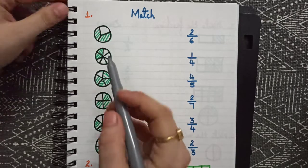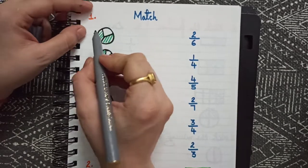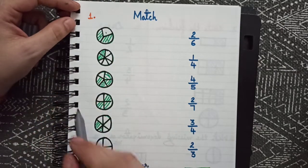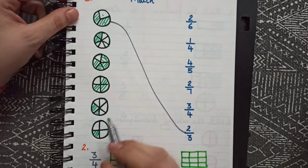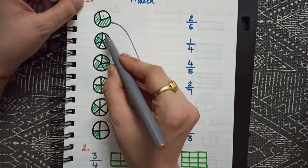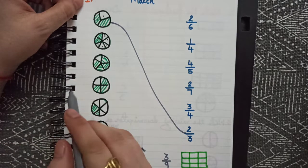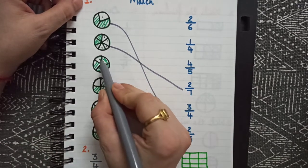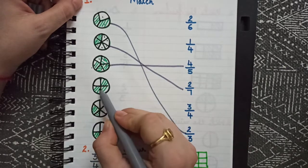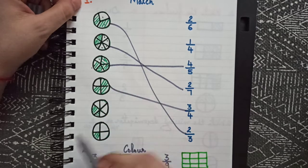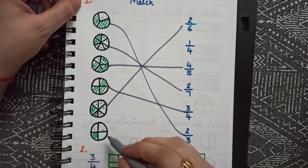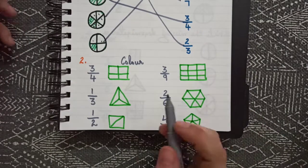Let's understand with examples. Give kids this sort of exercise. First we count the number of divisions made — one, two, three — so that is three, and the shaded part is two, so the answer is two by three. Again, one, two, three, four, five, six, seven — that's seven — and two shaded, so two by seven. Again, five is the denominator and shaded parts are four, so four by five. Similarly: three by four, two by six, and one by four.